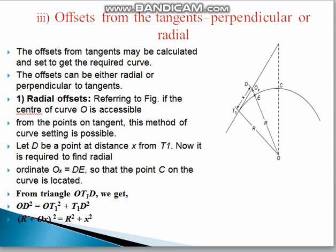First we see the radial offset method. This method uses perpendiculars from the tangent to set out the required curve. The offset can be either radial or perpendicular depending upon the tangent. Looking at the figure: let O be the center of the curve, T1 be the tangent point, and E be a point on the curve.